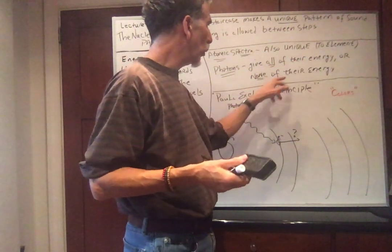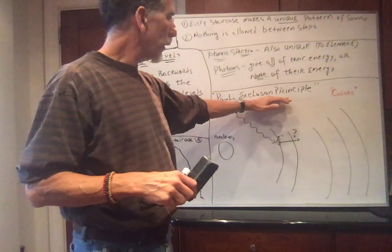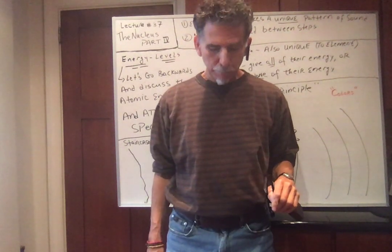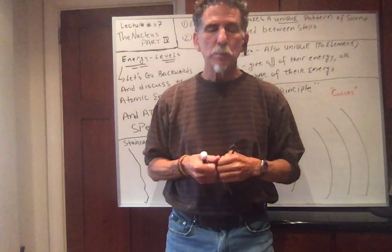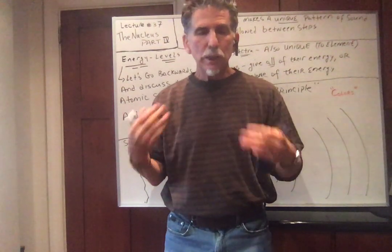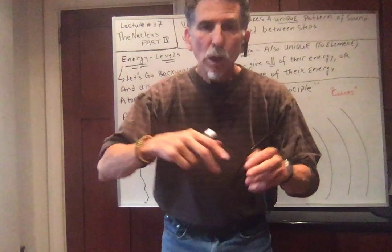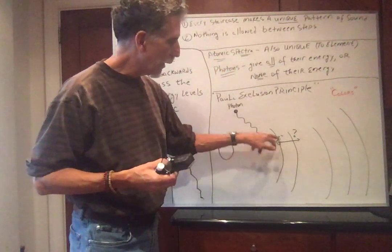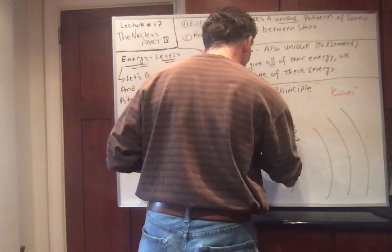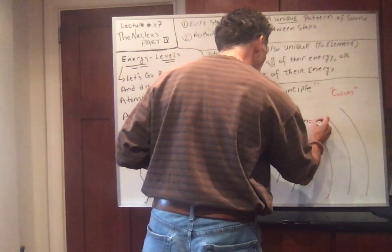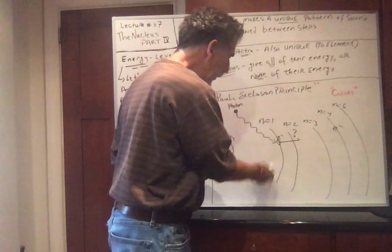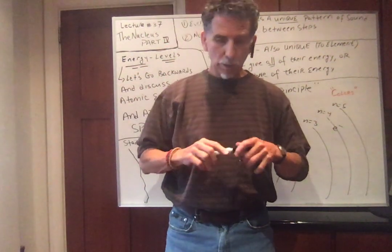Photons give all their energy or none of their energy. Before I talk about that, I want to mention the Pauli exclusion principle, named after Wolfgang Pauli. Essentially, this says that no two electrons can be in the same state at the same time. So if we imagine electron energy levels, what I've been saying in almost every lecture is that everything wants to be in the lowest energy level. So how come in an atom all the electrons are not in the first energy level — N equals one? There's N equal to two, three, four, five. How could there be electrons in other orbits? Why isn't everything in the lowest energy level, the ground state?